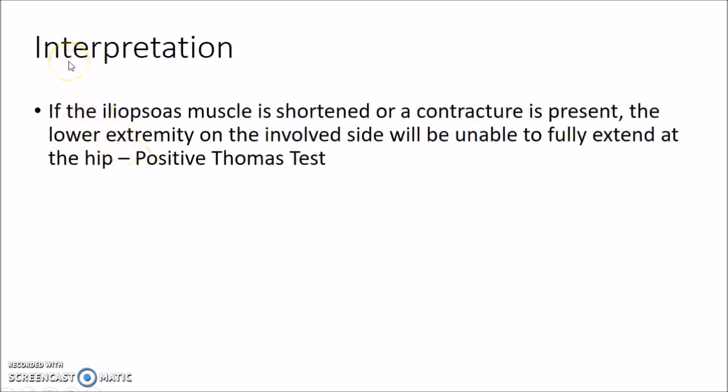Now let us see about the interpretation of Thomas test. If the iliopsoas muscle is shortened or a contracture is present, the lower extremity on the involved side will be unable to fully extend at the hip. This is known as positive Thomas test.